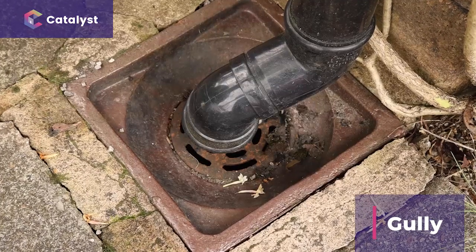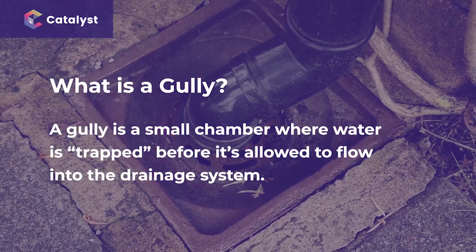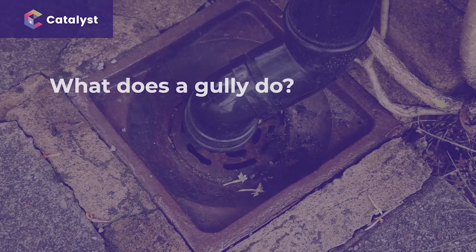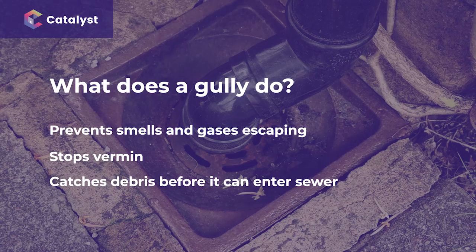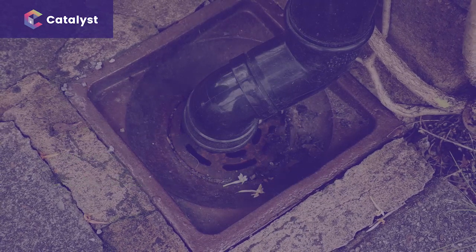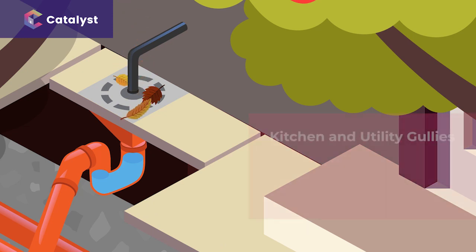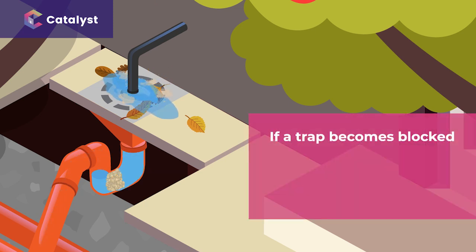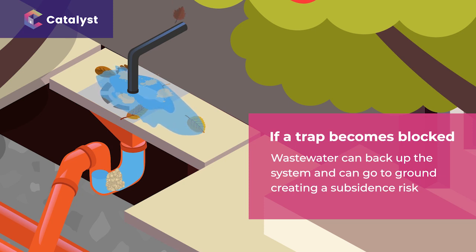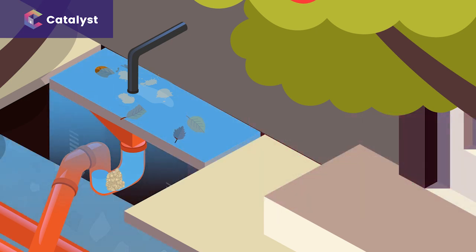The engineer must now inspect the gully — a task that is often overlooked. What is a gully? A gully is a small chamber where water is trapped before it's allowed to flow into the drainage system. It prevents smells and gases escaping from drains, stops vermin, and catches debris before it can enter the sewer system, preventing possible blockages. By their design, gullies are prone to blockages as debris builds up in the trap. For kitchen and utility gullies, this can include fats and grease from kitchen sinks and detergent residue from washing machines and dishwashers. If a trap becomes blocked, waste water can back up the system and go to ground, creating a subsidence risk. This tells us regular inspection and maintenance of accessible drainage can prevent avoidable blockages that can have serious consequences.